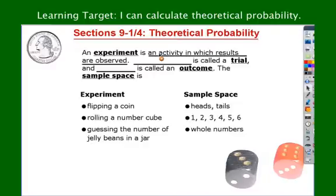An experiment is an activity in which results are observed, and each of these observations is called a trial. So this could be flipping a coin, rolling a number of cubes, guessing the number of jelly beans in a jar, or figuring out the weather. The outcome is called the result — the observation when you try it is a trial, and each result is an outcome.